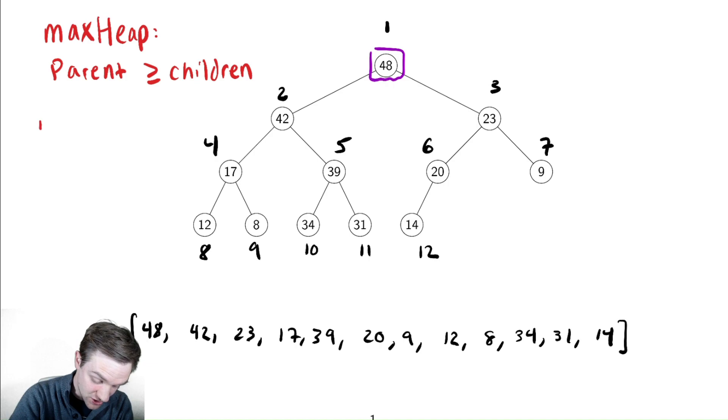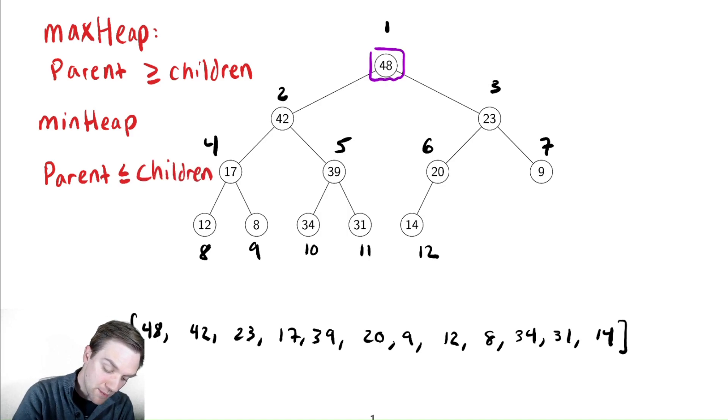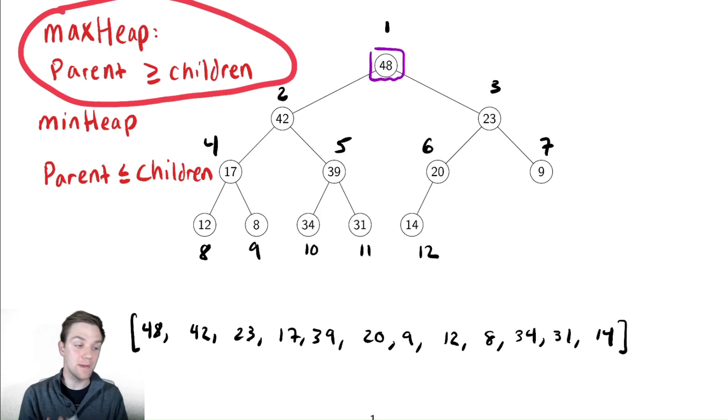An alternative implementation you may have seen before would be a min heap. A min heap has the exact opposite property, which is that the parent is always less than or equal to the children. We are going to primarily focus on the max heap. All of the methods we do here will work just as well for a minimum heap as long as you make minor adjustments though.